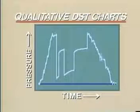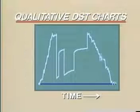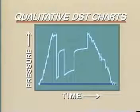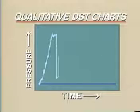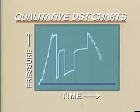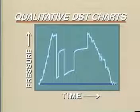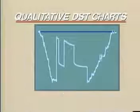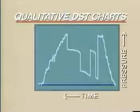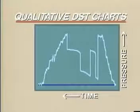Here we see a pressure-time plot for a typical DST chart. Note that pressure on the vertical scale increases upward, and time on the horizontal scale increases from left to right. Based on the convention of an individual service company or the design of a particular manufacturer's pressure recorder, the pressure scale or the time scale may be reversed. The manner of recording should not affect the final results, but we have to know which is which.